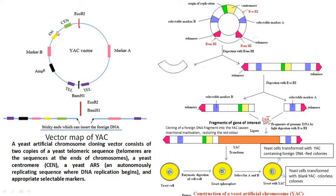There are two selectable markers — selectable marker B and selectable marker A — present for the eukaryotic system. Most importantly, it contains the origin of replication, that is ARS (autonomously replicating sequence), and then the centromeric region for the eukaryotic site. This circular form can replicate in the bacterial system. When you digest it with PalmH1, it gets linearized, and the two selectable markers get separated so you can clone your gene of interest between these two linearized arms.